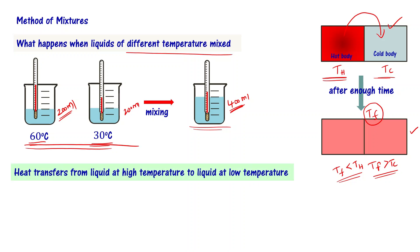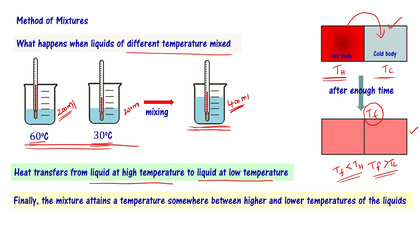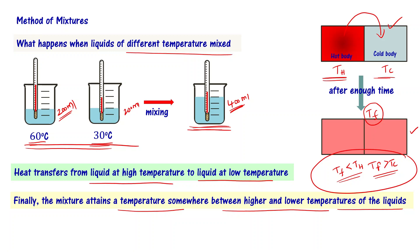Heat is going to transfer from the liquid at high temperature to the liquid at low temperature. Hot water molecules transfer heat to cold water molecules. Once that happens, the mixture finally attains a temperature somewhere between the higher and lower temperatures of the liquids. The final temperature of the mixture is going to be somewhere between the higher and lower temperatures of the liquids.